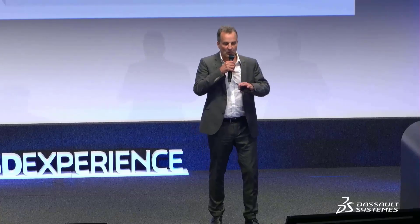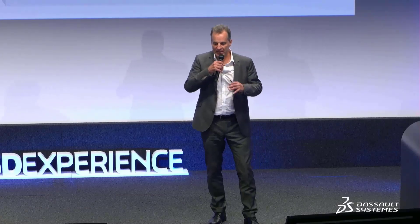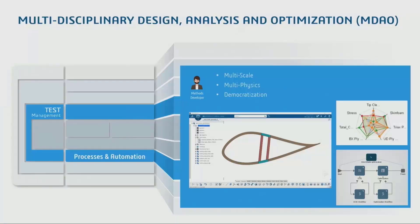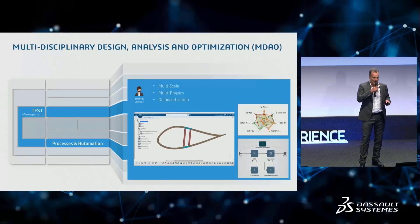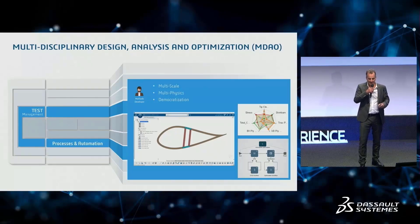What we want to do is bring it all together — the design, the simulation, the structural analysis, and the multi-physics model — all into one loop so we can start doing design of experiments and optimization. We are now doing a complete multidisciplinary design, analysis, and optimization of that blade.